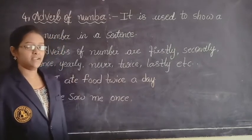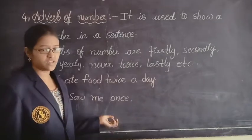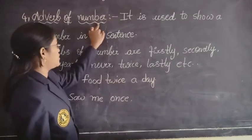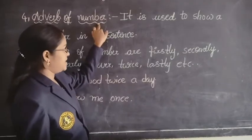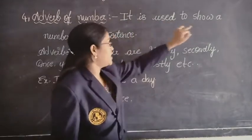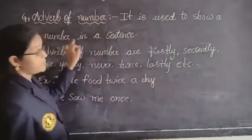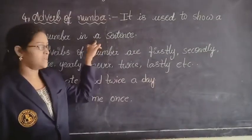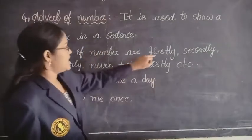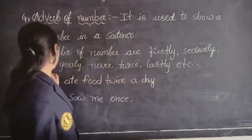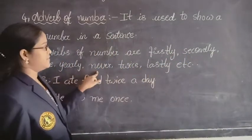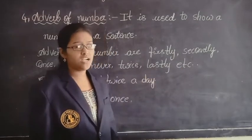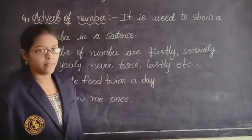Whenever we are writing a sentence, if we use words like these they will come under the adverb of number. So the definition of adverb of number is: it is used to show a number in a sentence. Some examples are: firstly, secondly, once, yearly, never, twice, lastly, etc. These are the adverbs of number.